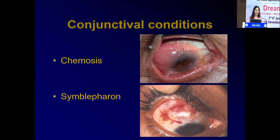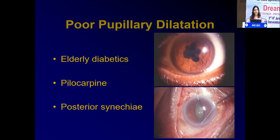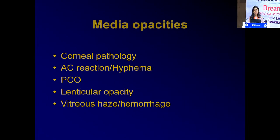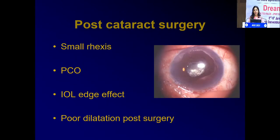Poor pupillary dilatation in elderly diabetics, pilocarpinized eyes, and posterior synechiae are challenges. Media opacities like corneal pathology, AC reaction, PCO, lenticular opacity, or vitreous haze also pose difficulties. Post-cataract surgery: when the IOL edge defect or IOL glare effect comes into play during indirect laser procedures, the burns just won't go through. Poor dilatation post-surgery is also a challenge.